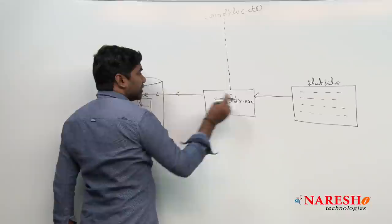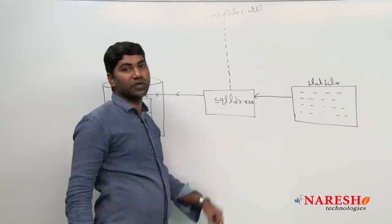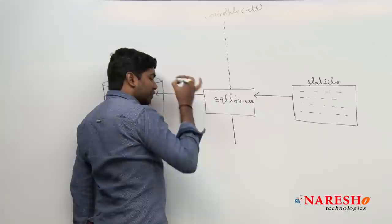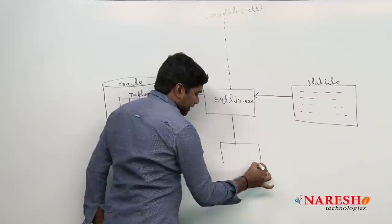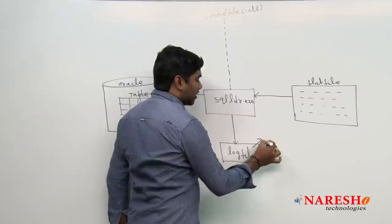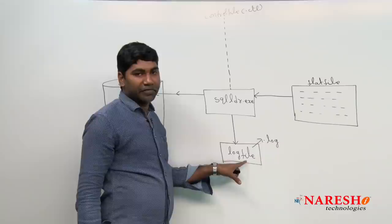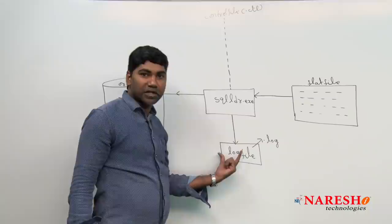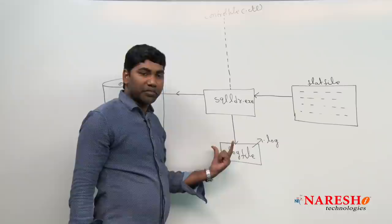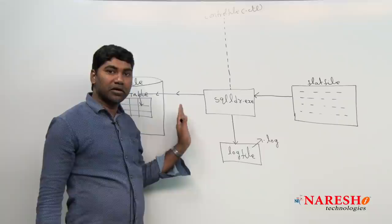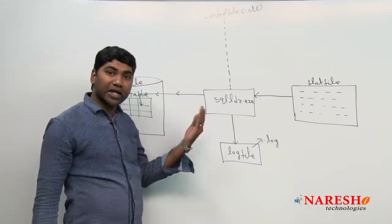During the data transfer process, automatically some other files are also created. One file created is the log file, with extension .log. This log file we refer to daily in a project. It contains: what errors occurred during the process, how many records were loaded, how many records were rejected, Oracle error numbers and error messages — all these details are available in the log file. The log file stores information about all other files, loaded records, rejected records, and skipped records.